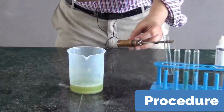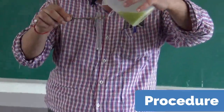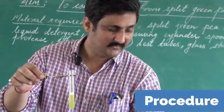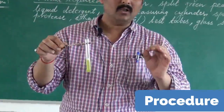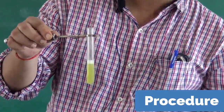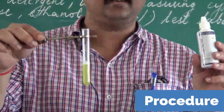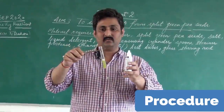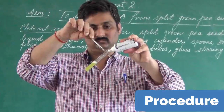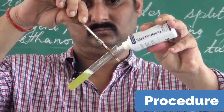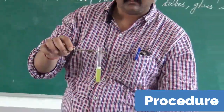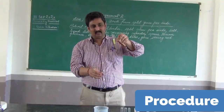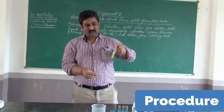Now we are going to pour this solution into a test tube — about one-third the size of the test tube. After this, we will be adding a small amount of protease enzyme — about 2 to 3 drops. This is a contact lens cleaning solution which contains protease enzyme. Protease enzyme is responsible for the breakdown of protein. We are going to add just 2 to 3 drops and then stir it very smoothly, because if we stir too hard that can break the DNA fibers. Care has to be taken to stir very lightly.